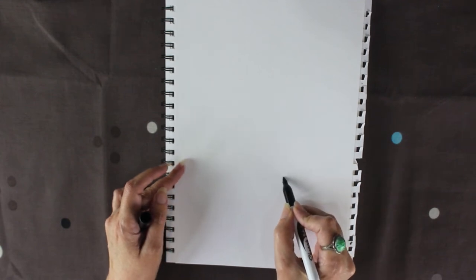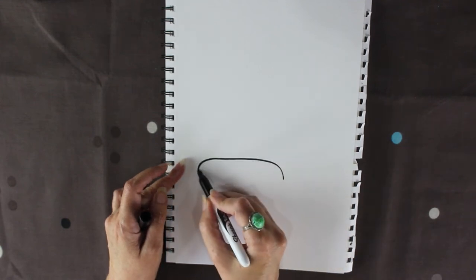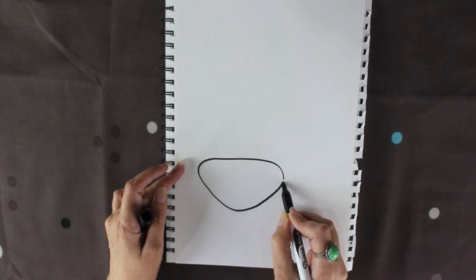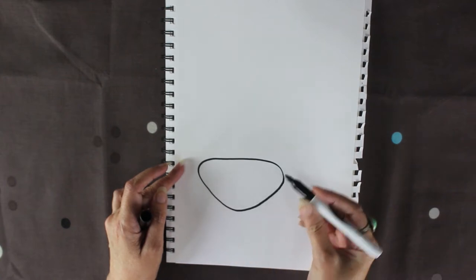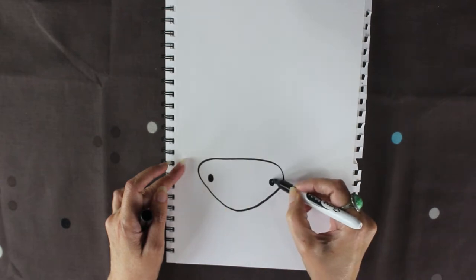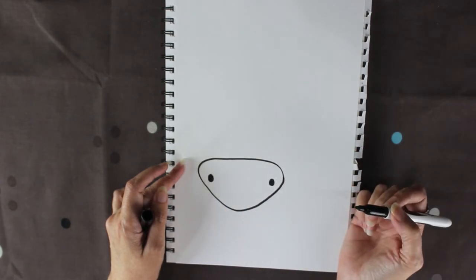So we're going to come around, down. It's a bit triangular with the circles on the side. We're going to give him some nostrils. So one big spot of nostril there. One big spot of nostril there.